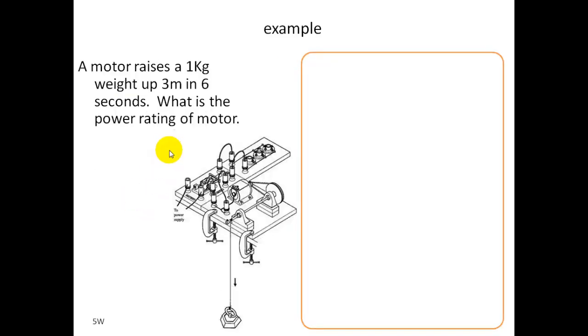A motor raises 1 kilogram mass up 3 meters in 6 seconds. It travels 3 meters in 6 seconds. So what is the work done by this? It's 1 kilogram, which is 10 newtons, times by 3. Divided by 6, because that's the time it takes. So the power rating is 30 divided by 6, which is 5 watts.